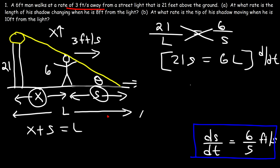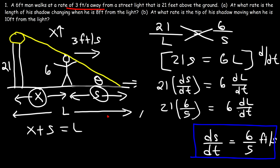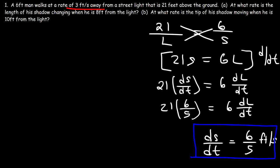So the derivative of 21S is going to be 21 times dS/dt. And the derivative of 6L is going to be 6 times dL/dt. Now we have dS/dt already, so we can plug it in to this expression. So what we have now is 21 times 6 over 5. And that's equal to 6 times dL/dt. So at this point, we no longer need this picture. So we can get rid of it. Now I'm going to work on this side here. Let's multiply both sides of this equation by 1 over 6.